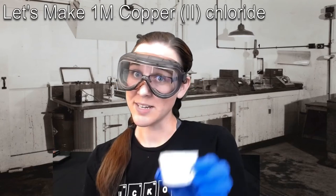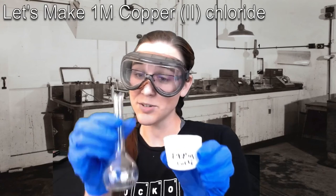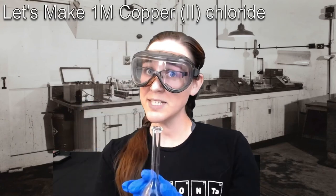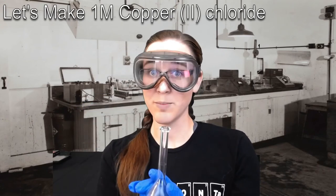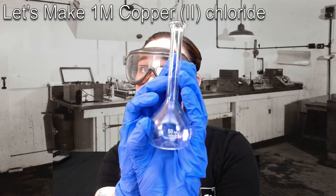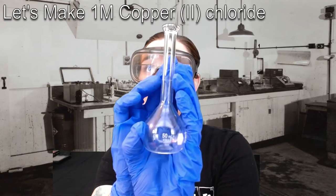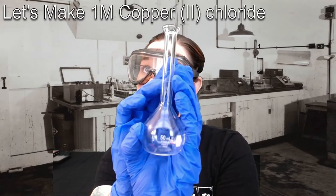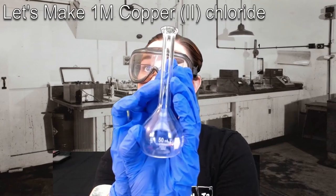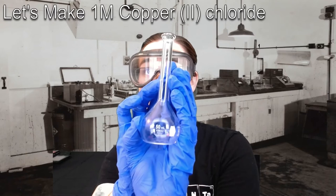The next thing I need to do is take my massed out solid CuCl2 and add it to a volumetric flask. The reason I'm using a 50 milliliter volumetric flask is because a 50 milliliter volumetric flask is much more accurate at measuring a solution's volume. Notice this little line right here on the neck of my volumetric flask. That's where I'm going to be filling the water up to to have a very precise exact measurement of volume.